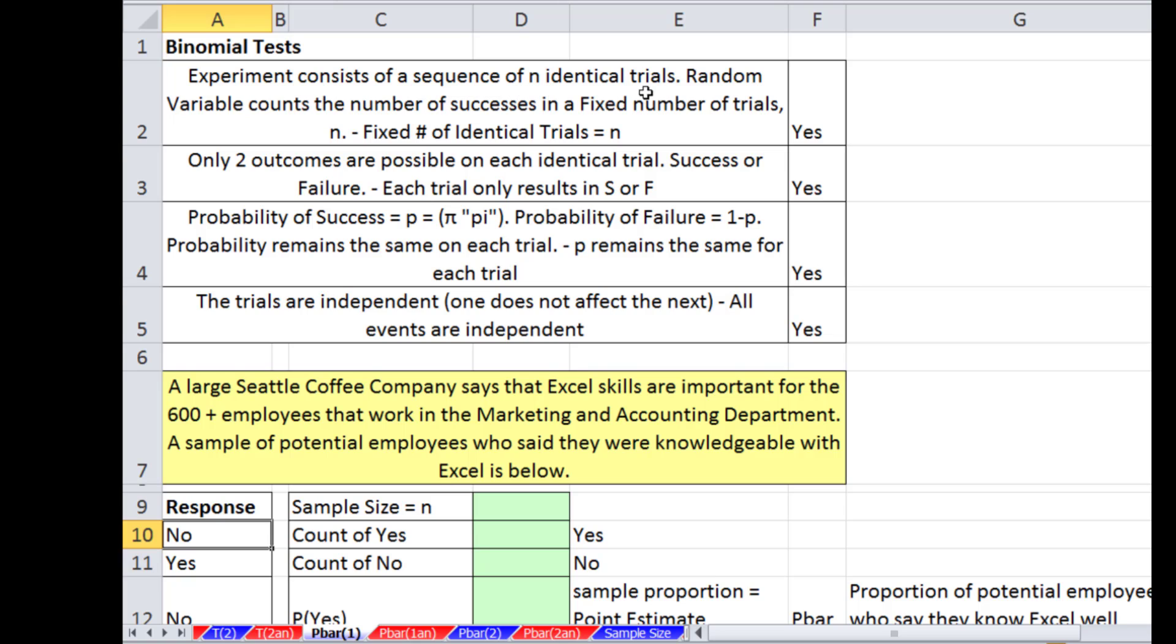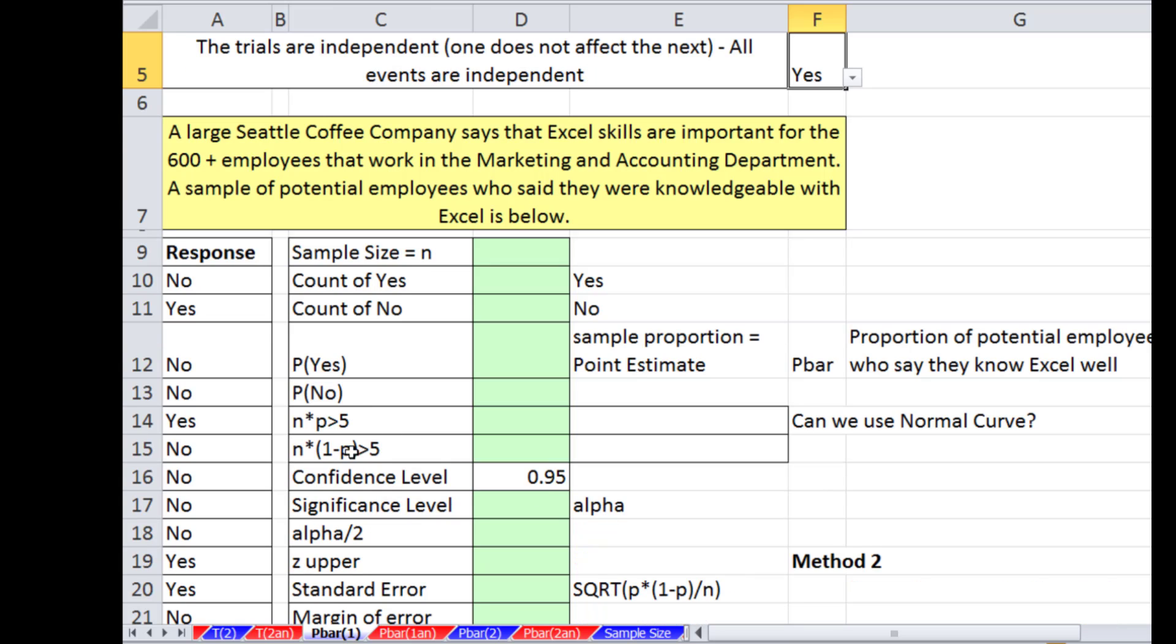Experiment consists of a sequence of n identical trials - fixed number of identical trials, yes that's true. Two outcomes identical on each trial - they either answer yes, they say they're knowledgeable, or no they're not. You can imagine this is a question on some document they're submitting as a potential employee. Probability of success remains the same on each trial. The trials are independent, so each potential employee is not affecting the next. All the tests are met. There is actually one further test: we have to check whether n times p is greater than 5 and n times 1 minus p is greater than 5. If both are true, we can use the normal.